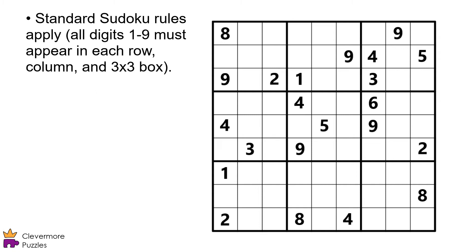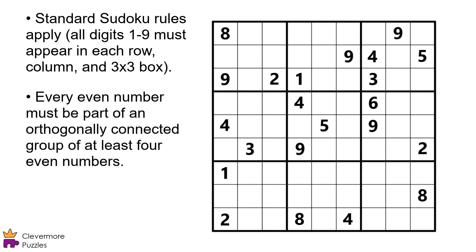While you're filling in the rest of the plan, make sure every even number is part of an orthogonally connected group of at least four even numbers. Otherwise, those people won't have the manpower to fight off the surrounding infected.